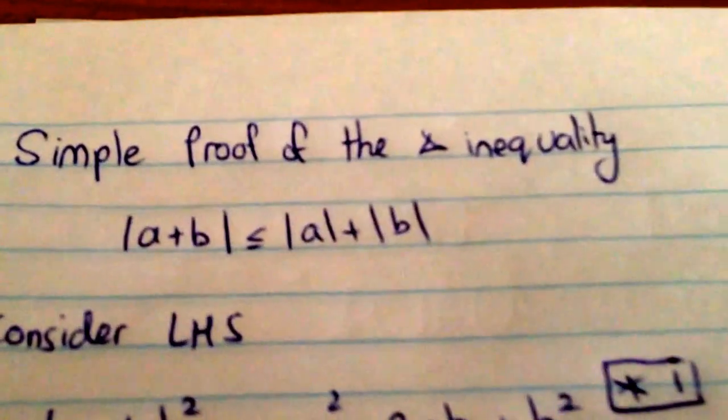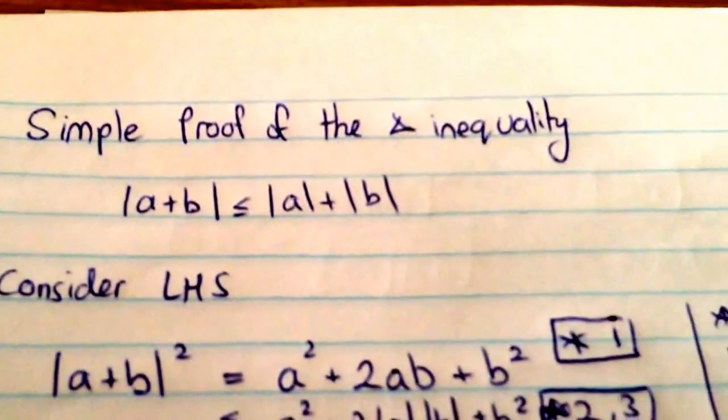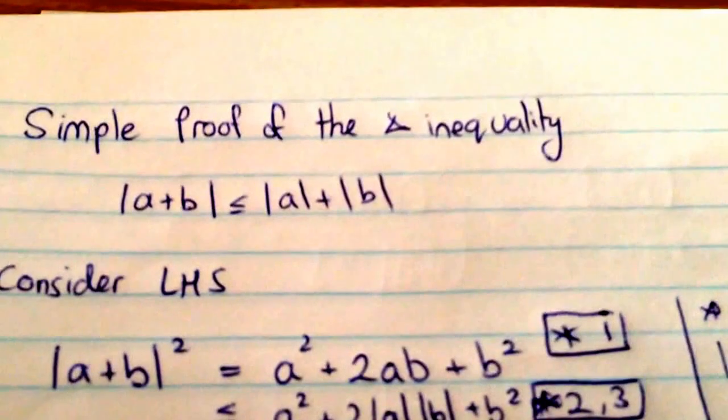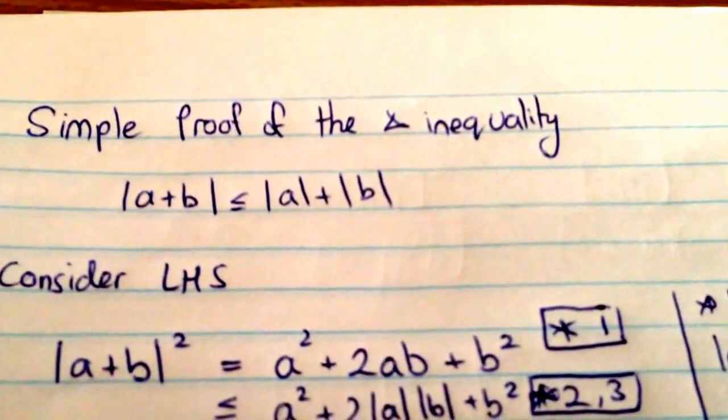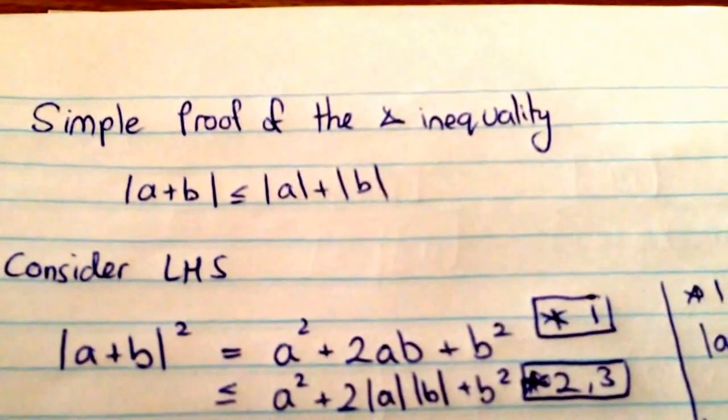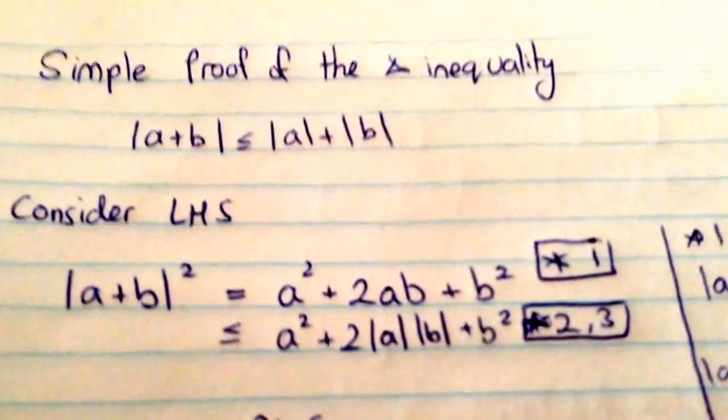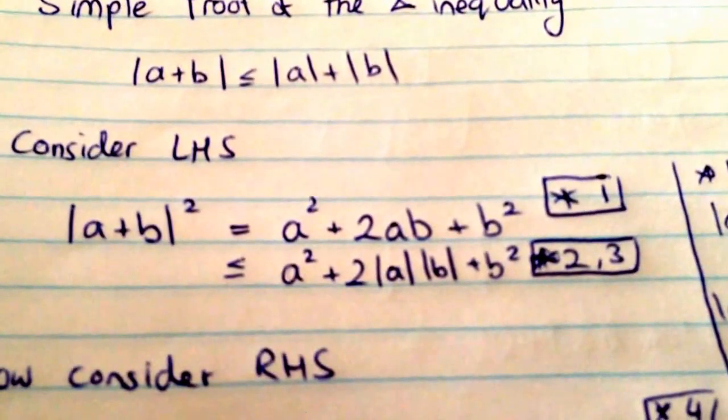So the triangle inequality states that the modulus of a plus b is less than or equal to mod a plus mod b. We'll look at what the significance of this is after we've shown this. But essentially it's very important and it's a key property of triangles. Let's first start by considering the left-hand side of the equation.